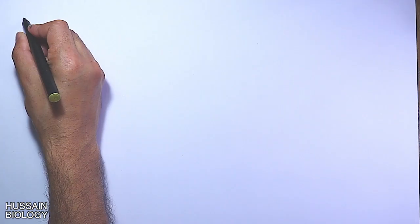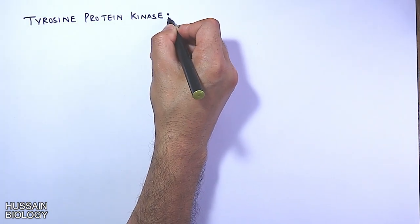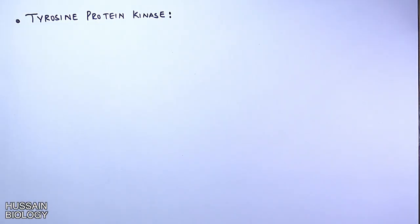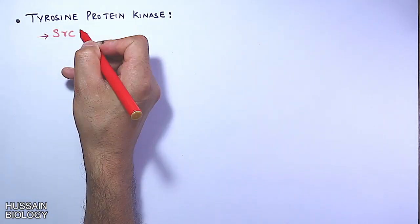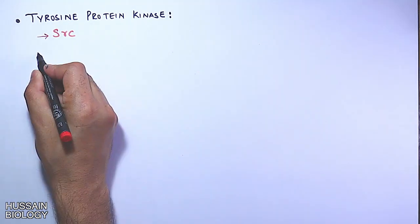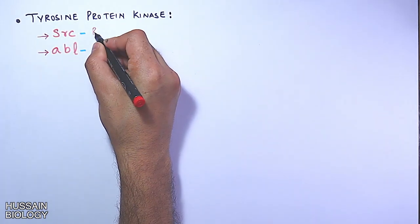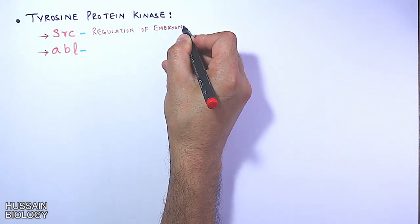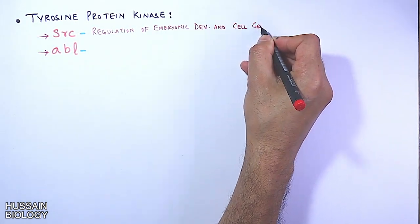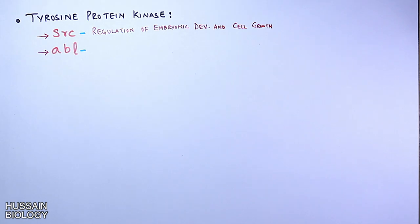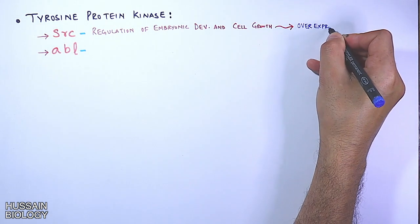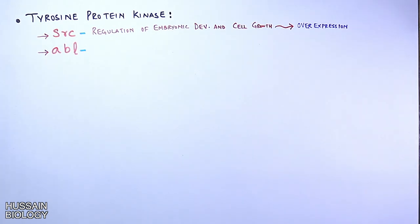Looking at some types of proto-oncogenes and their corresponding oncogenes: first, we have tyrosine kinase-based proto-oncogenes like SRC and ABL. The SRC proto-oncogene aids in the regulation of embryonic development and cellular growth, but when it gets mutated or overexpressed it leads to colon cancer.